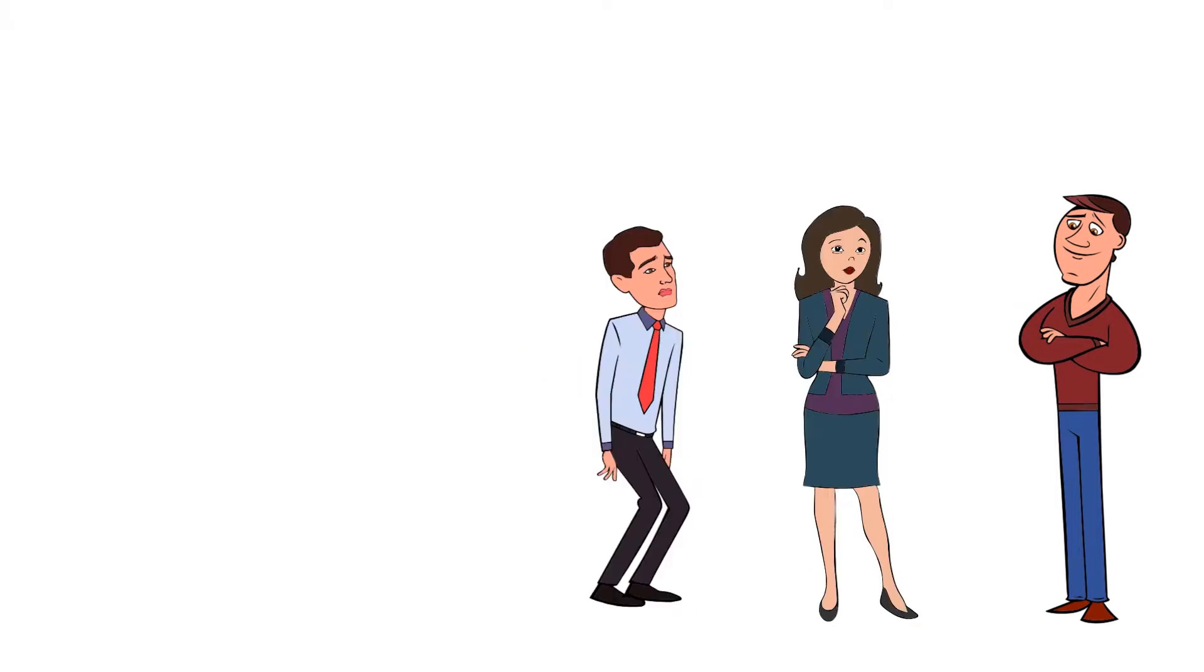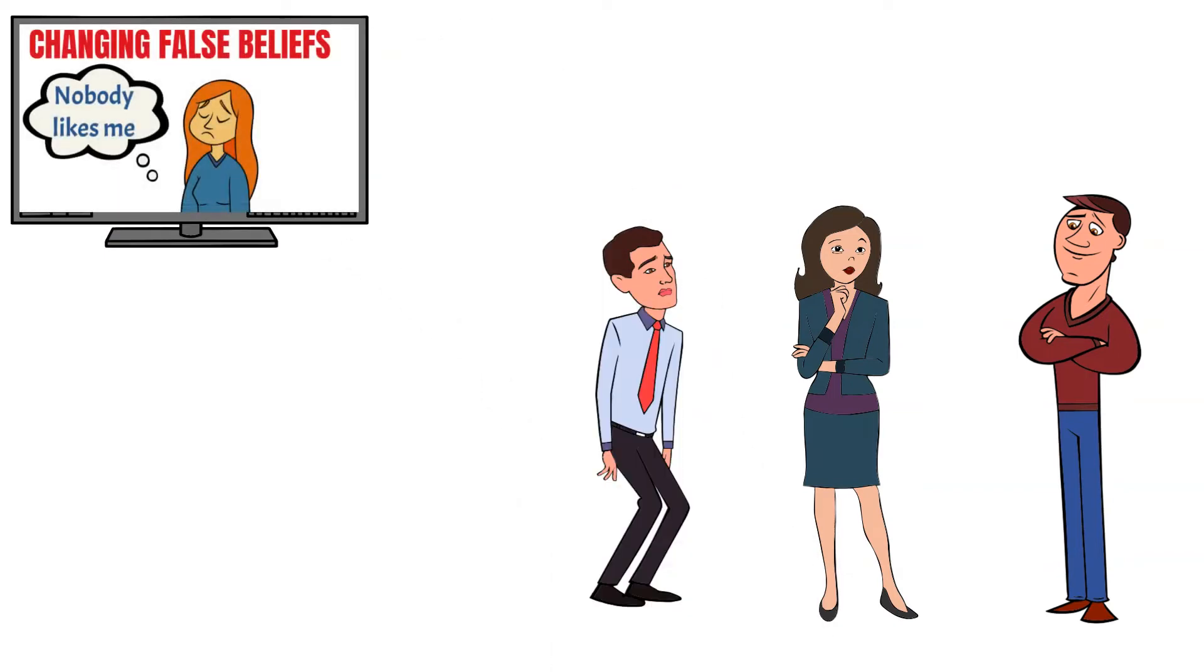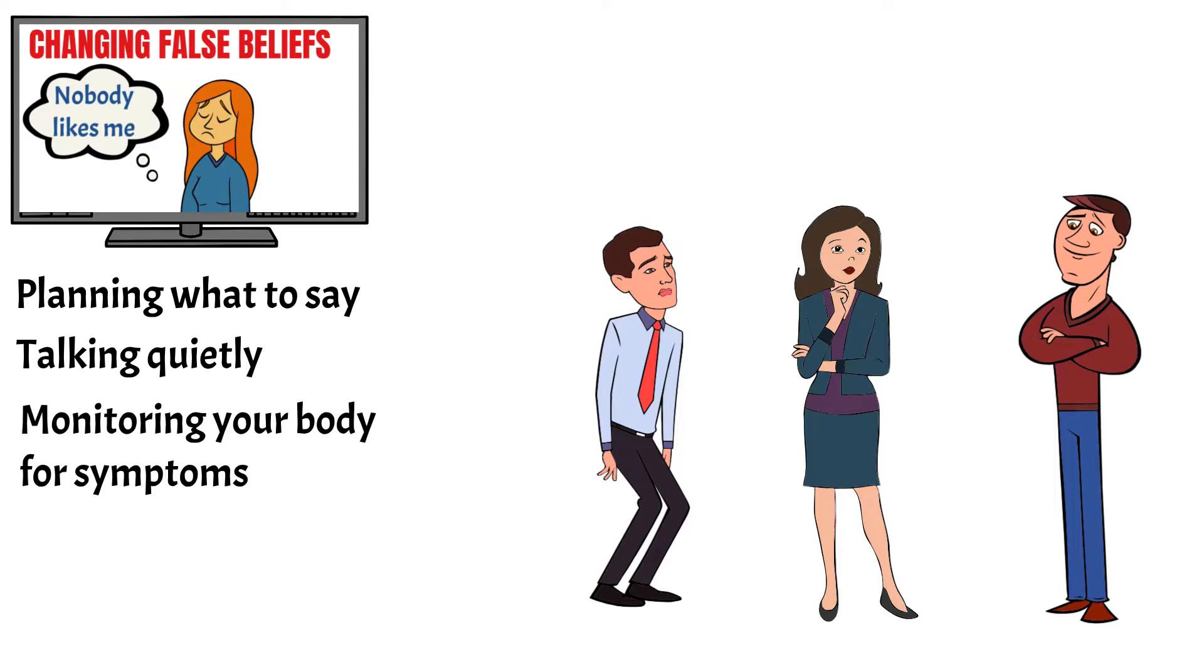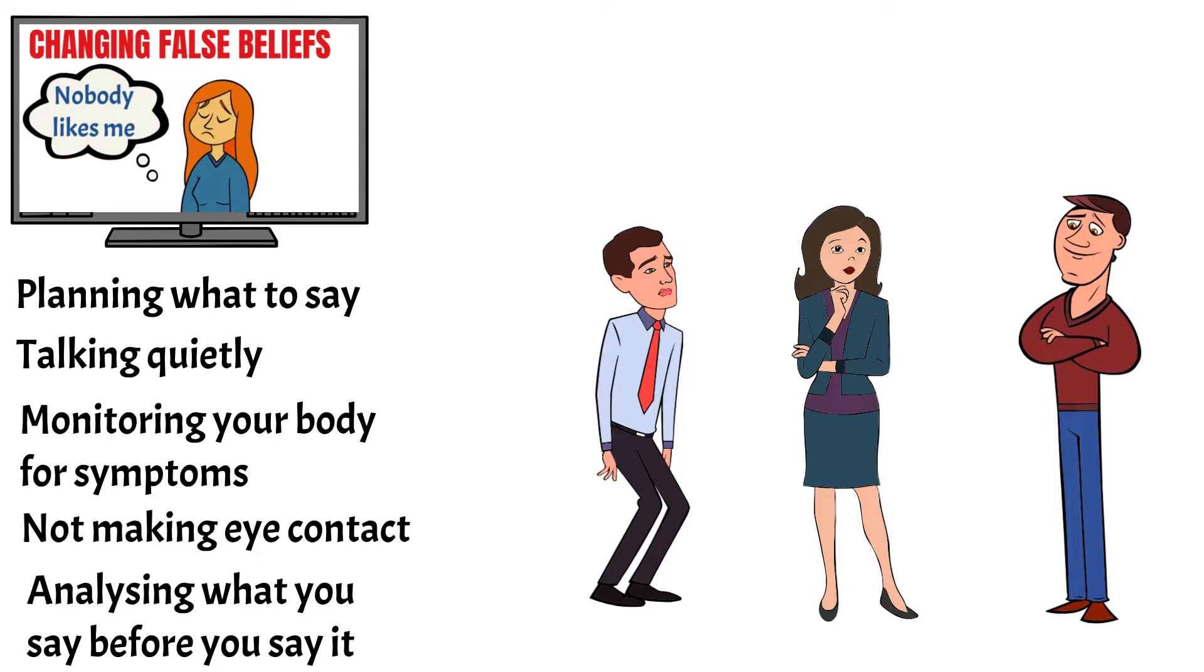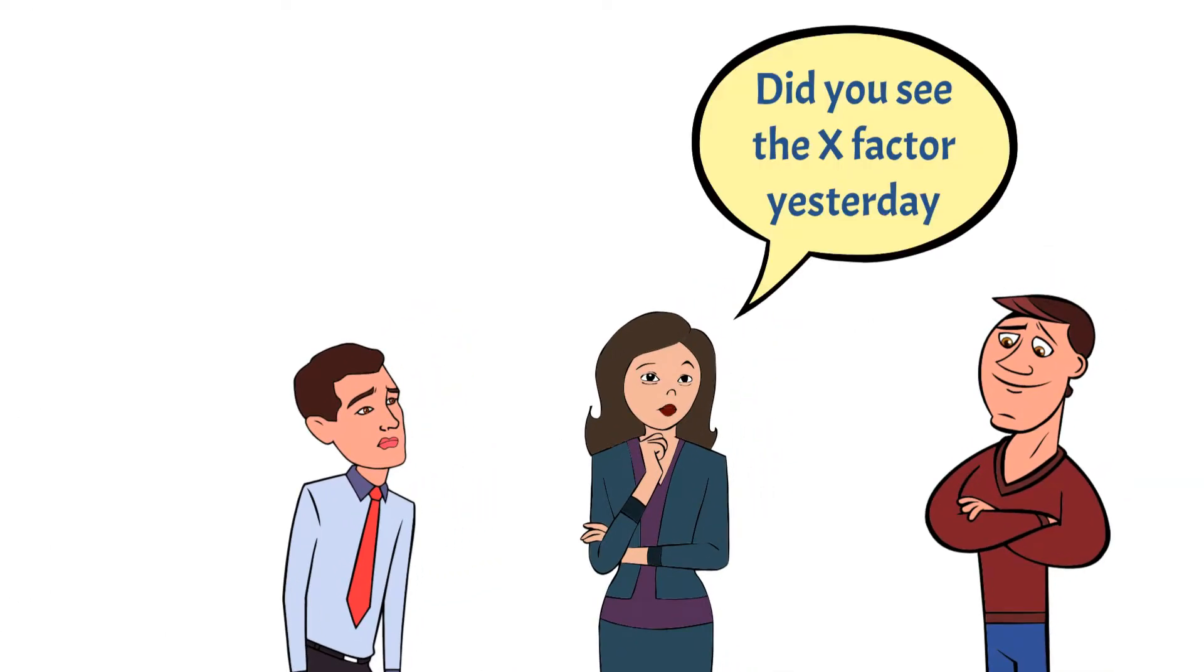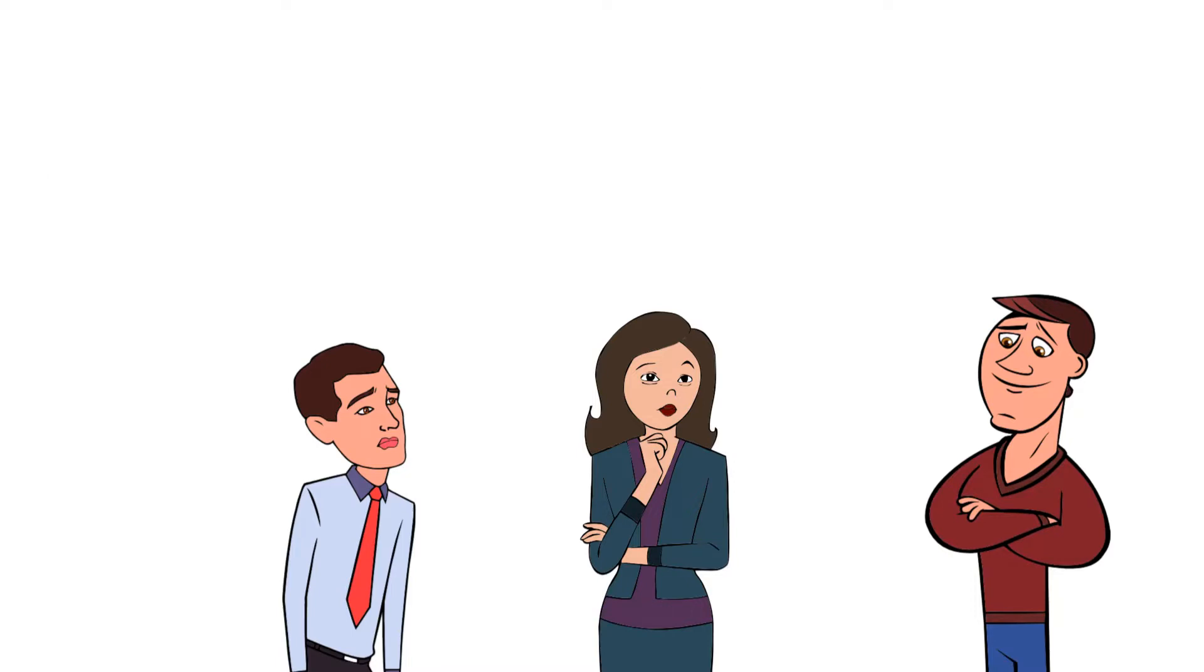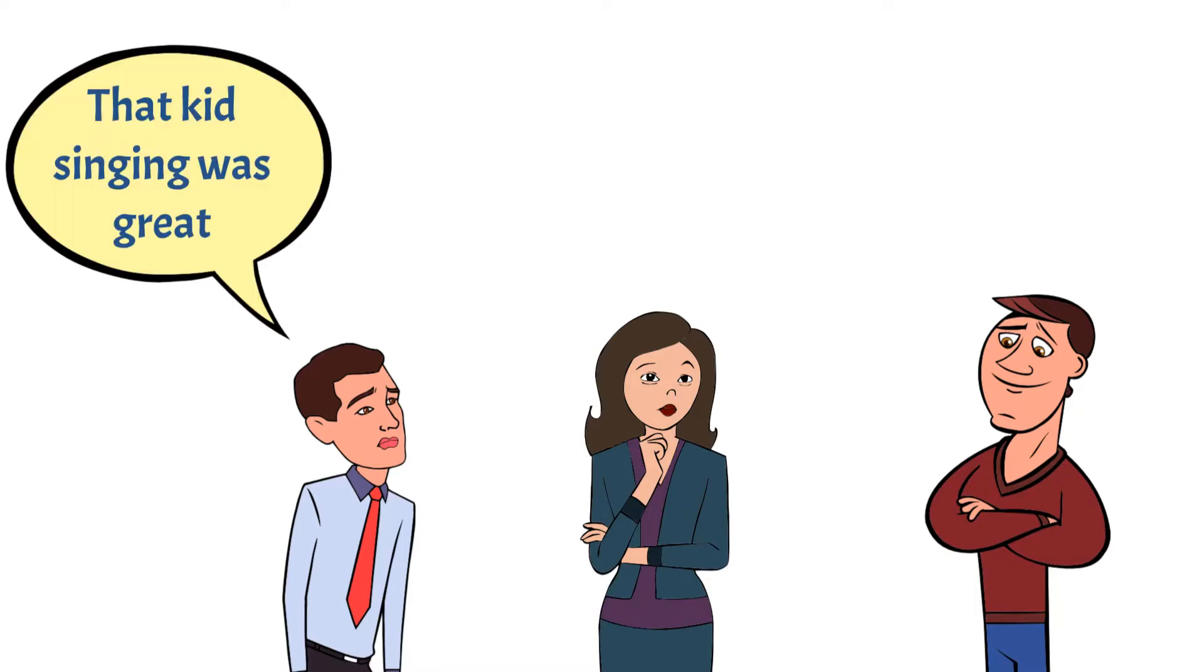But watch out for the safety behaviors that you learned about in video 4. These are things like planning what to say, talking quietly, monitoring your body for symptoms, not making eye contact, analyzing what you say before you say it. The last one is particularly destructive, because by the time you have analyzed what you are going to say, the conversation has moved on. So just take a risk and say it.